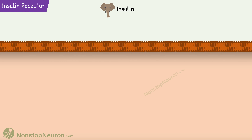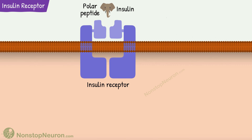That brings us to the insulin receptors. Can you guess where insulin receptors would be? The insulin is a polar peptide molecule, so it cannot cross the lipid bilayer of the cell. Based on this, you might now be able to predict the location of insulin receptors. Yes, they are found on the cell membrane.